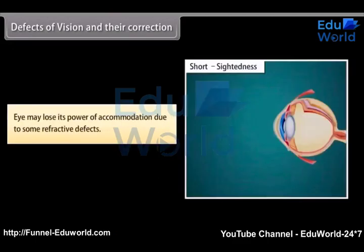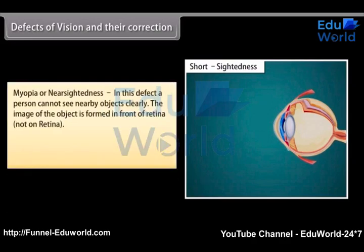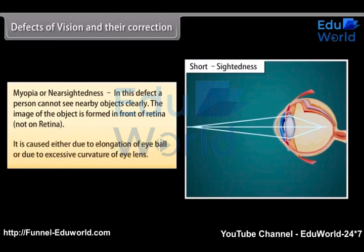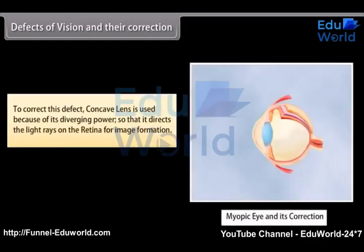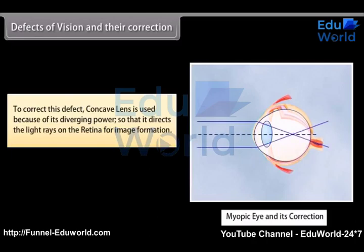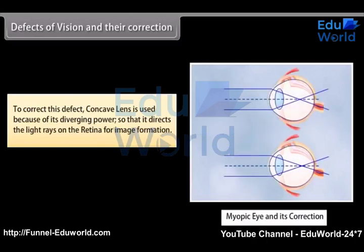Defects of vision and their correction. The eye may lose its power of accommodation due to some refractive defects. There are three such defects. Myopia or near-sightedness — in this defect, a person cannot see nearby objects clearly. The image of the object is formed in front of the retina. It is caused either due to elongation of the eyeball or due to excessive curvature of the eye lens. To correct this defect, a concave lens is used because of its diverging power, so that it directs the light rays on the retina for image formation.